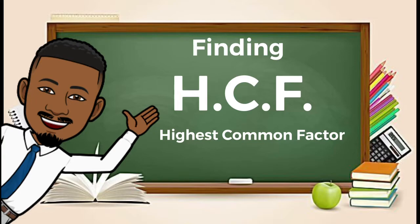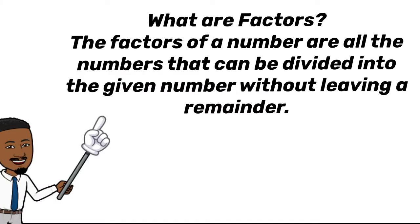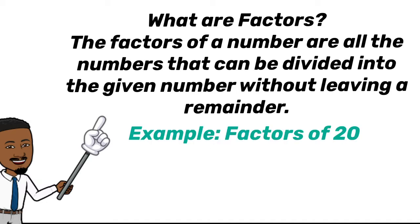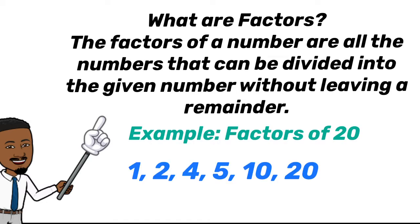For today's lesson we are going to be looking at finding highest common factors. But before we do that, let us look at what factors are. The factors of a number are all the numbers that can be divided into that given number without leaving a remainder. For example, the factors of 20 would be 1, 2, 4, 5, 10 and 20, because all these numbers can be divided into 20 without leaving a remainder.